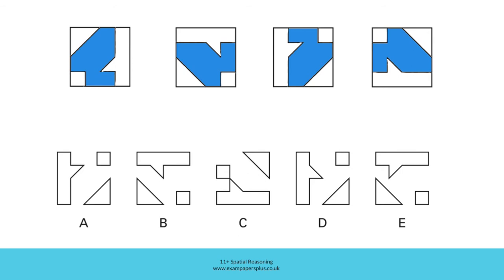In option A, for that longer shape to be towards the left of the collection, the square and the triangle would need to be positioned like this — and in A, this is the case. A could be the right answer. All of the elements of these shapes appear to be correct and they all have the same or correct relationship to one another as they do here.